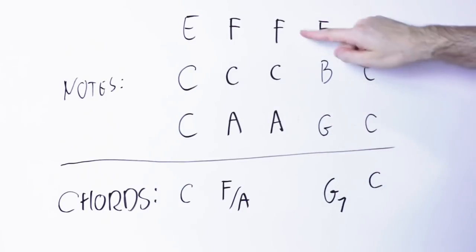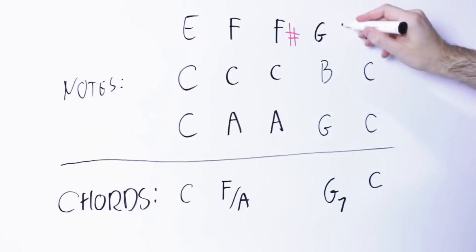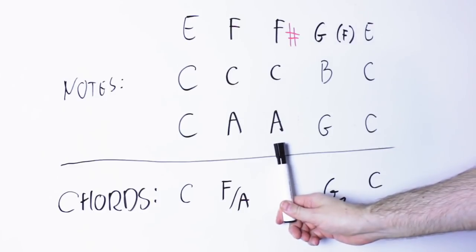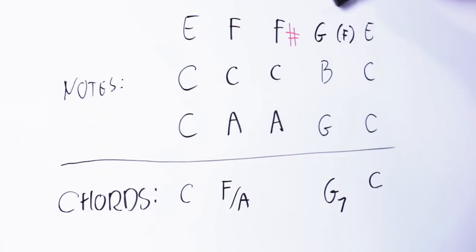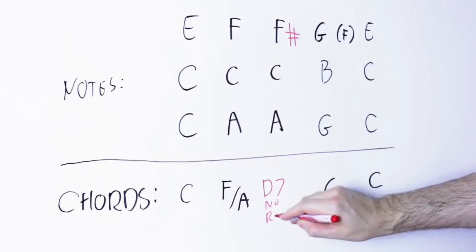Is this the only thing we can do? No, for instance, we could take this F over A and then make this F note here an F sharp and then resolve it to the G note into the G seventh chord. So what is this chord here? If we look just at the notes, it looks like being an F sharp diminished triad.